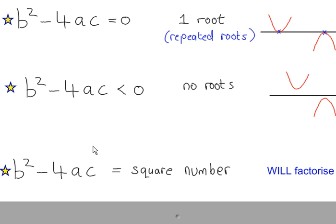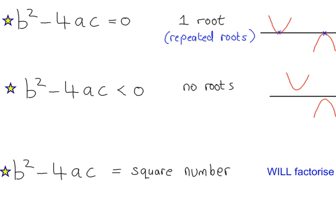If the discriminant turns out to be a square number, this will suggest that you can factorise the quadratic equation that you're working with. So if you're trying to factorise a quadratic equation and you're not sure if it does factorise — because sometimes quadratic equations don't factorise — you may want to work out the discriminant first and check to see if you have a square number, such as 1, 4, 9, 100. If so, then you know you can factorise.